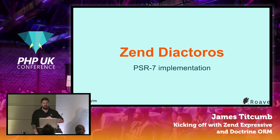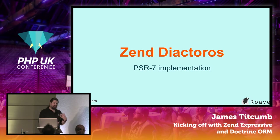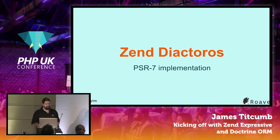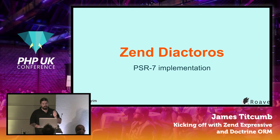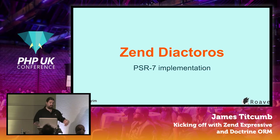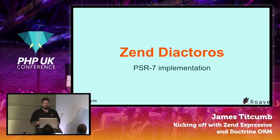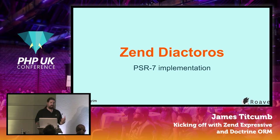Diactoros is just an implementation of PSR-7. It takes those interfaces and implements them. It allows you to modify them in an immutable way, meaning you're never mutating the same instance — you get a new instance back every time you say 'with added header' and things like that. Diactoros also handles serialization and deserialization of requests, and the body of your payload — whether request or response — is a stream.